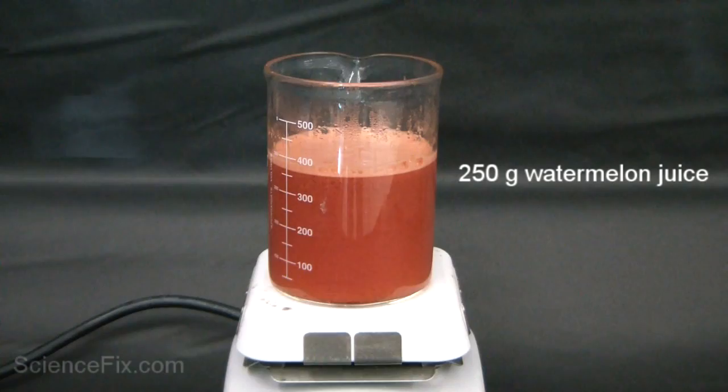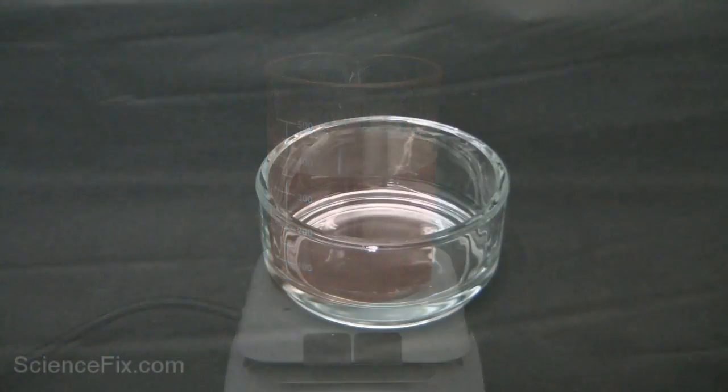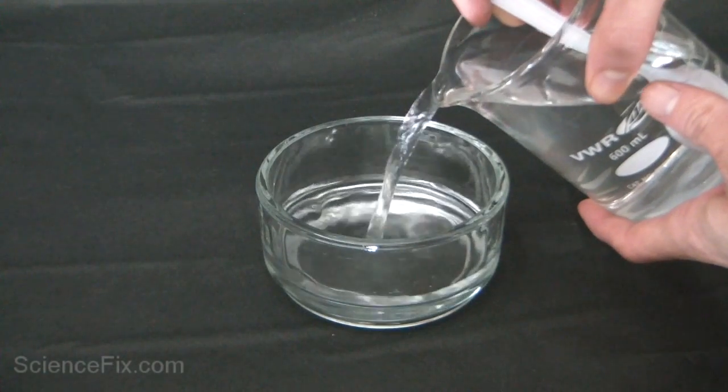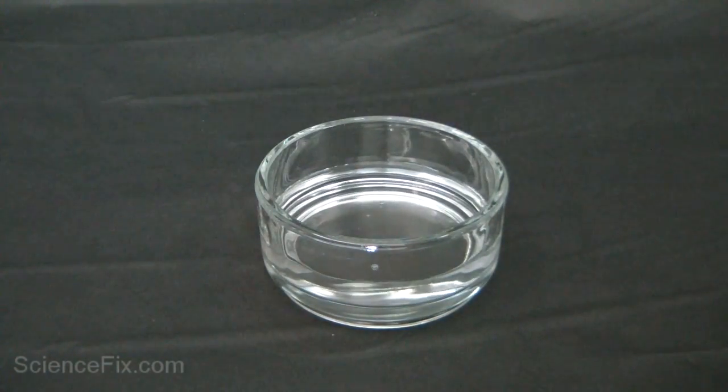Next we've gently boiled this watermelon juice to concentrate the flavors and we're now pouring the calcium chloride solution into a smaller shallower container.